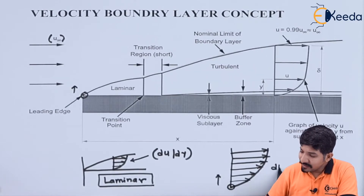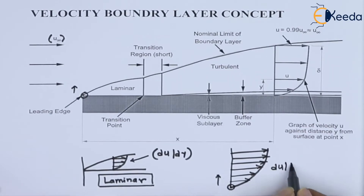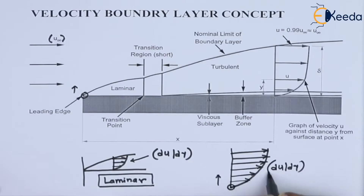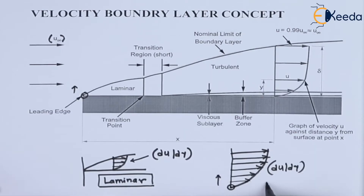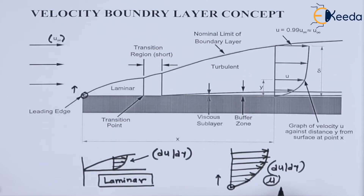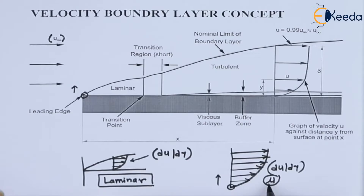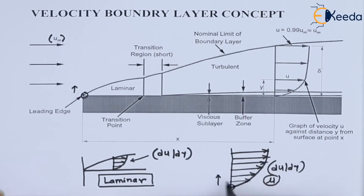This will cause a velocity gradient inside the fluid. This velocity gradient is responsible due to the presence of the viscosity of the given fluid. Because of this dynamic viscosity, there will be a velocity gradient that exists in the given fluid.